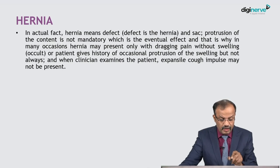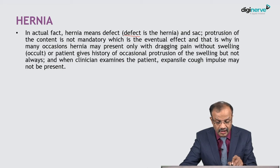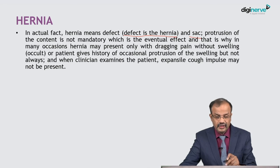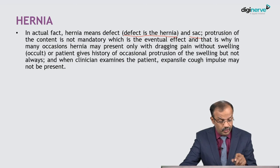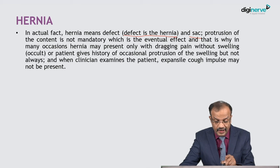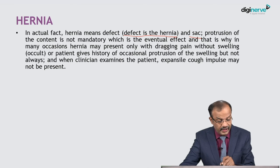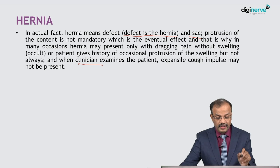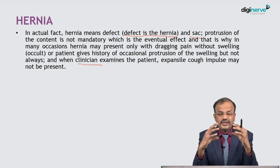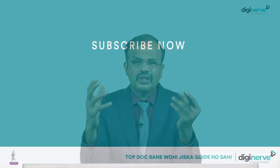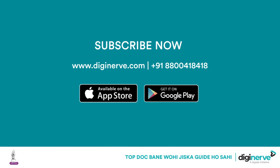The defect is the hernia, and the sac which contains the protruding content is not always mandatory. That is why hernia may sometimes present only with dragging pain without swelling. An occult hernia patient gives a history of occasional protrusion of swelling, but not always. When the clinician examines the patient, an expansile cough impulse may not be present. This point is very important.